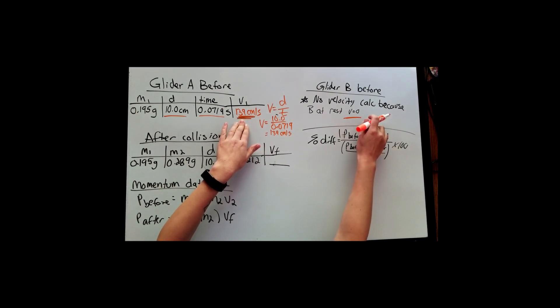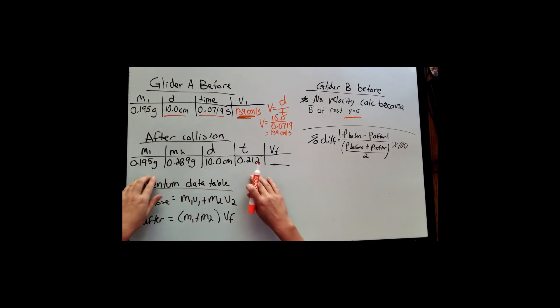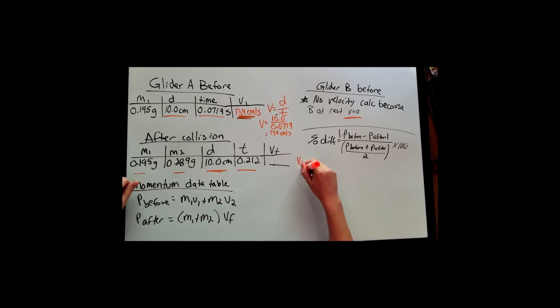This was an inelastic collision. So when they collided, they stuck together and they moved off together as one object. So after the collision, we have the mass of both gliders. We have that distance again of that flag that traveled through that photogate and the time it took. So we're going to calculate velocity again, but this time it's final velocity of both objects because now they're stuck together and they're one object going the same velocity in the same direction.